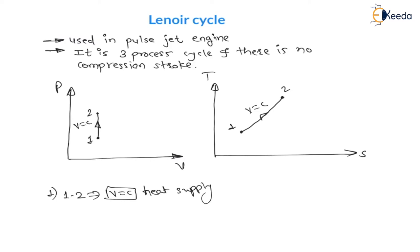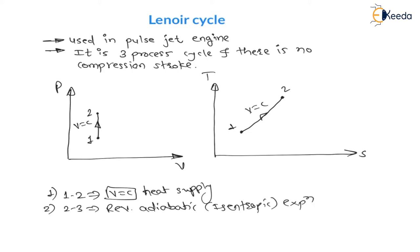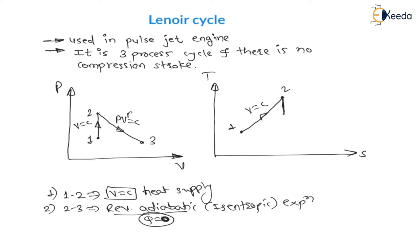The second process, 2 to 3, is reversible adiabatic expansion. Reversible adiabatic means isentropic — it is an isentropic expansion. Reversible adiabatic means there is no time for heat transfer; very fast processes are reversible adiabatic, and during very fast processes heat transfer is zero. Since it is isentropic, entropy remains constant, and during reversible adiabatic expansion temperature always drops. On a PV diagram, the process follows PV^γ = constant. On the TS diagram, at constant entropy, temperature decreases.